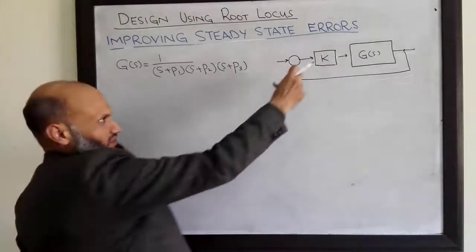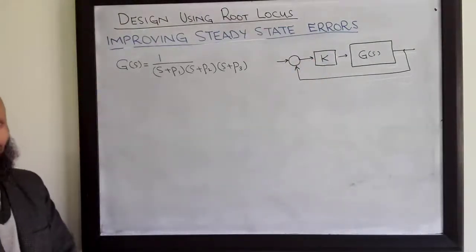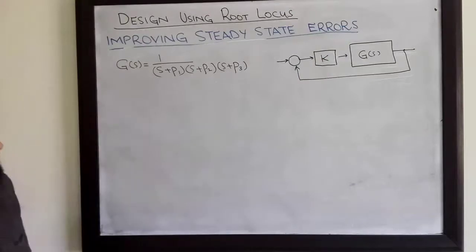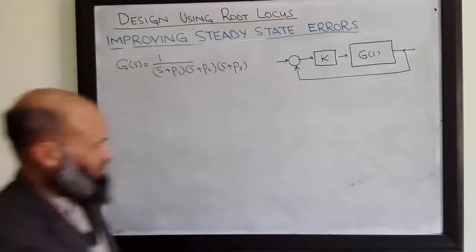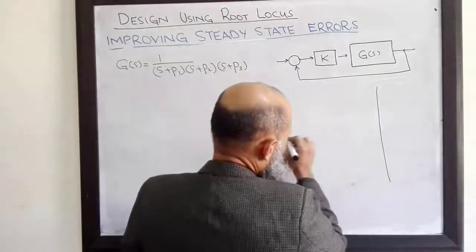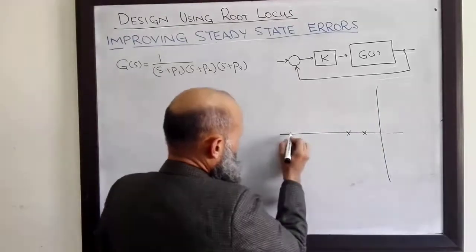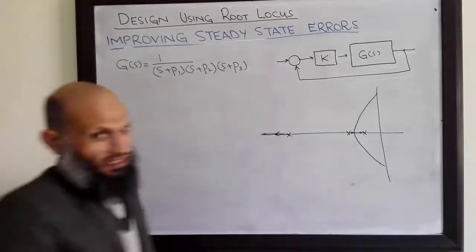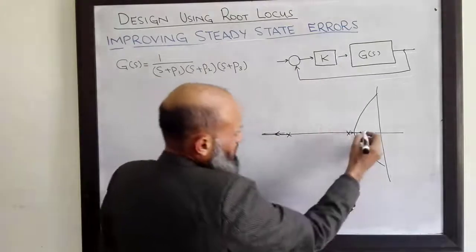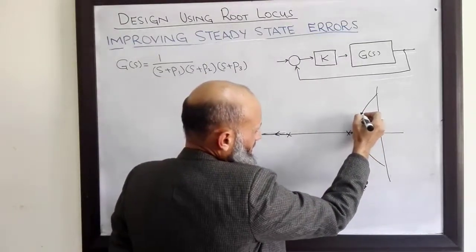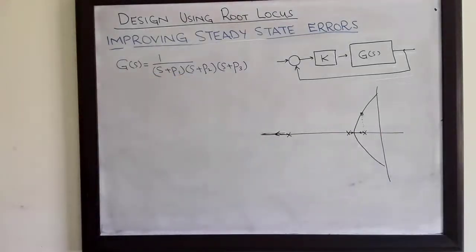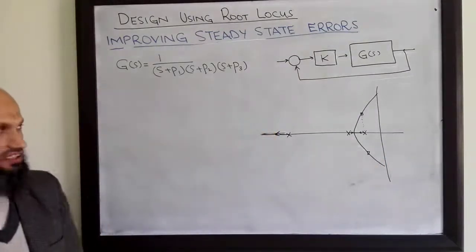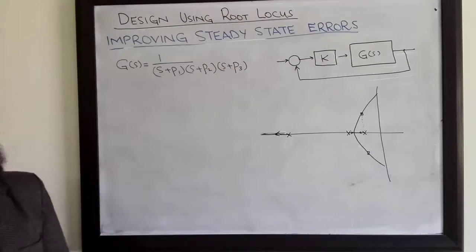To understand how we can improve steady state error, consider a system described by a block diagram. In the first step, we design gain K such that our transient characteristics are achieved — we learned this procedure in the last lecture. Here is the root locus for this system, with poles P1, P2, and P3. From the transient characteristics we find the location of the desired closed-loop poles and determine the corresponding gain. Suppose we are happy with the transient characteristics.